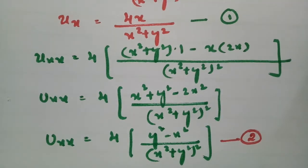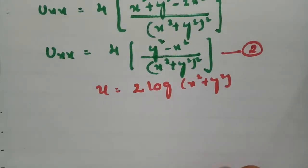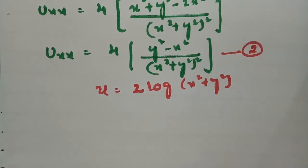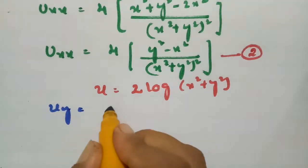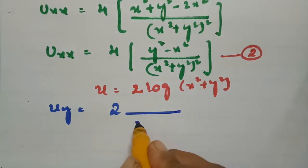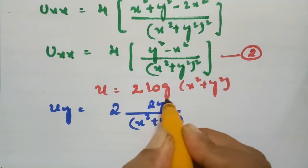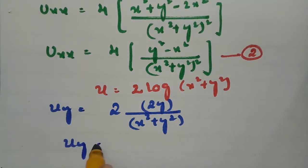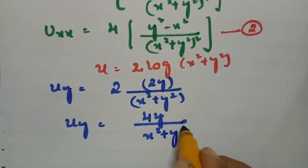Now, u is equal to 2 log of x square plus y square from the question, and I have to make a derivative with respect to y. So, uy: differentiating with respect to y, the derivative of log gives 1 by x square plus y square, and the derivative of x square plus y square with respect to y is 2y. So, uy equals 4y divided by x square plus y square. This is equation number 3.